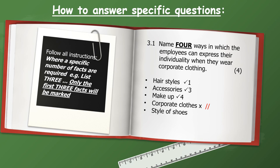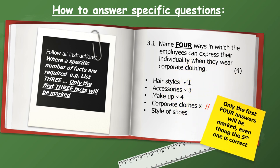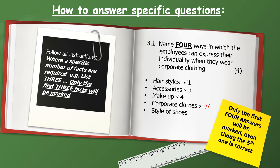When a specific number of facts are required — for example, 'list three' — only the first three facts will be marked. If it says 'name four ways employees can express individuality when wearing corporate clothing,' and the learner writes hairstyles, accessories, makeup, and corporate clothing (which is wrong), only the first four answers are marked. Style of shoes — though correct — is the fifth answer and will not be marked. Only the first four answers will be marked even if the fifth one is correct.